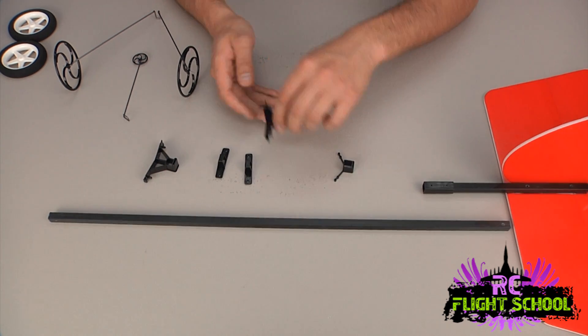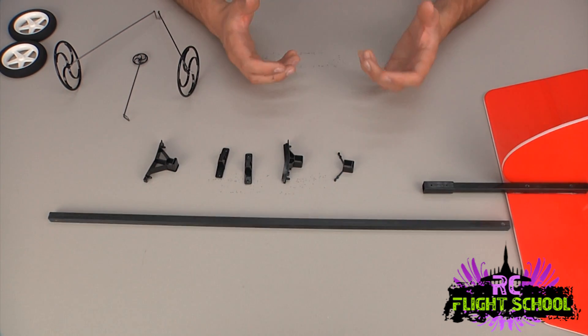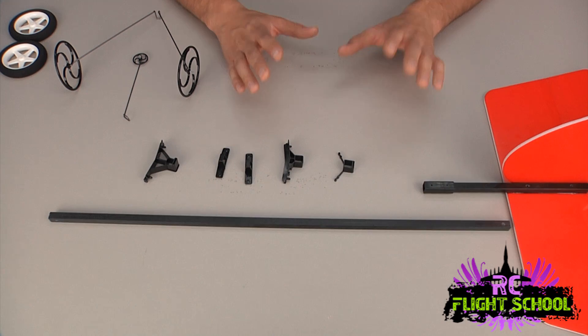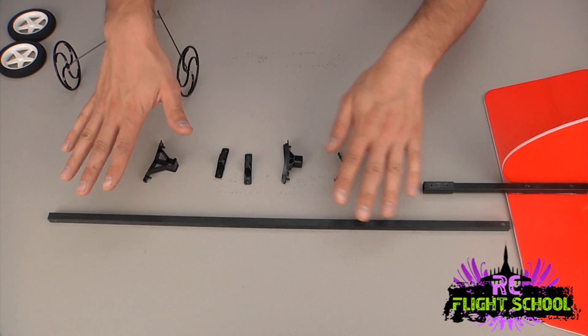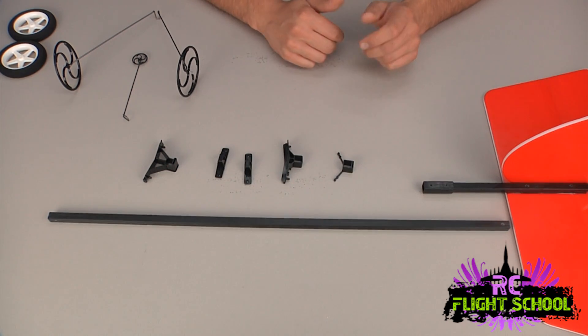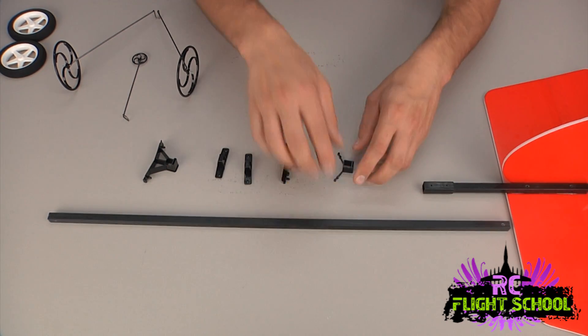Now the benefit again to a stick plane is that these guys here can just slide around. So you don't really have to worry about positioning right now. And honestly, I like to leave them loose. Some guys will glue these in place or screw them in place. I leave them loose so that in a hard crash everything can shift forward on the stick and you can go ahead and reset it later. It kind of helps absorb impact.